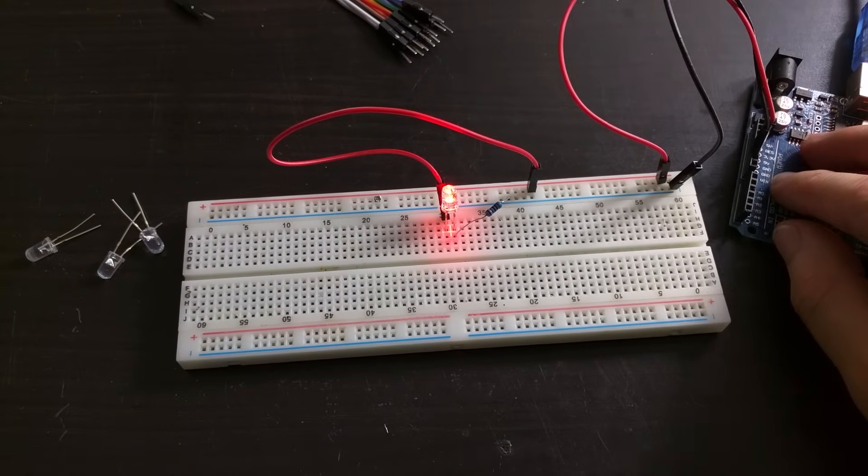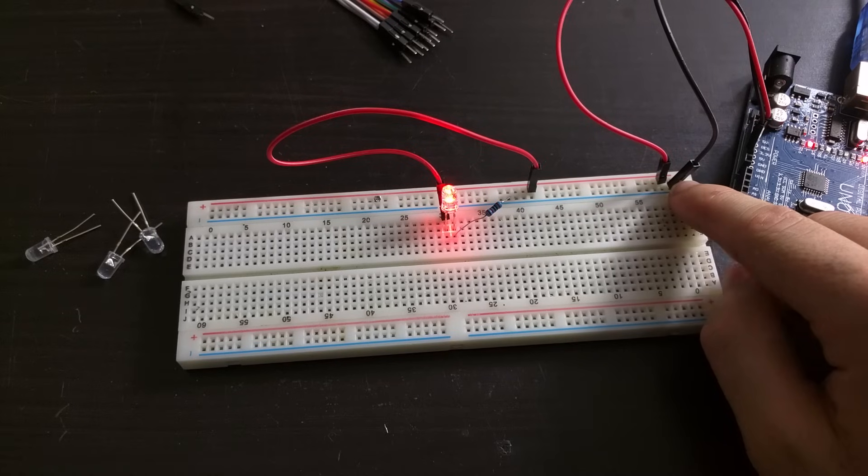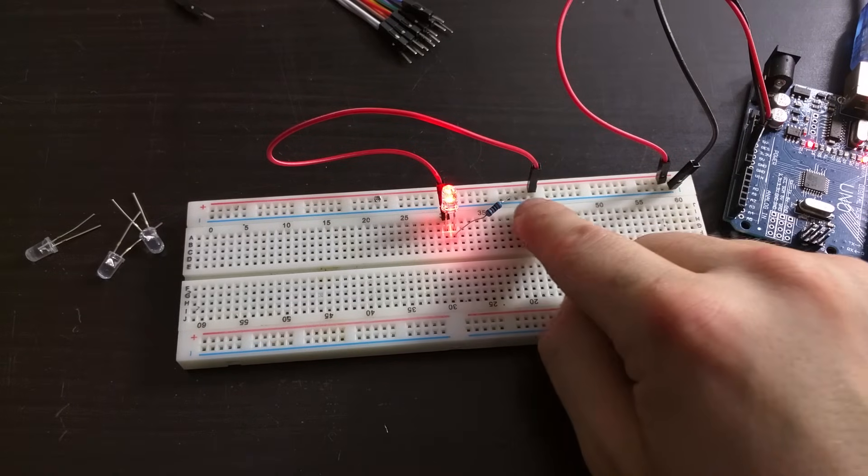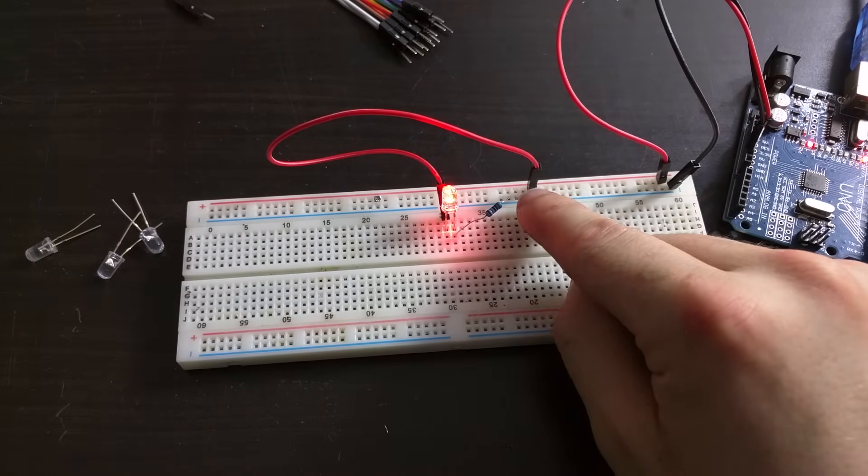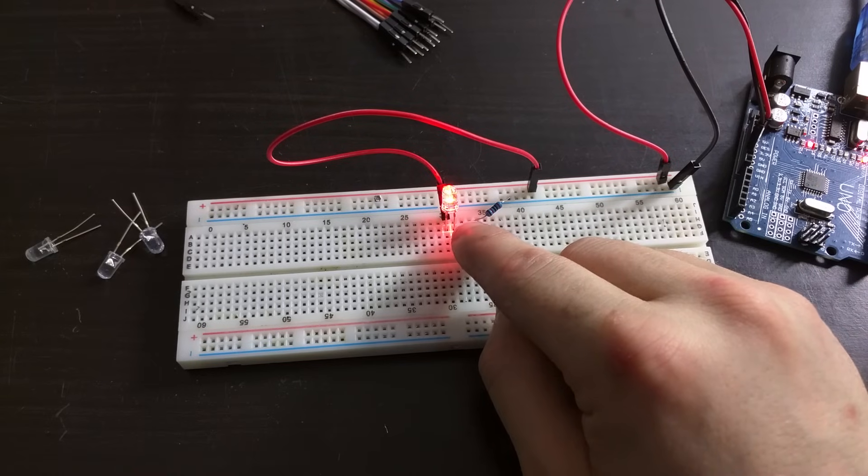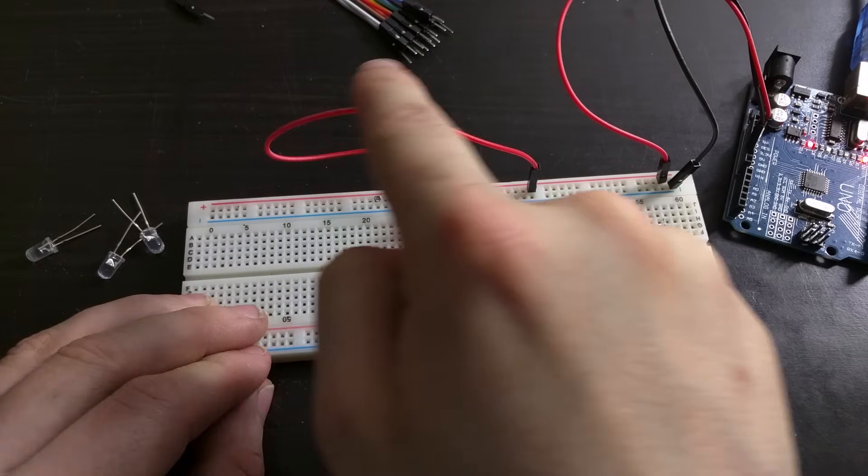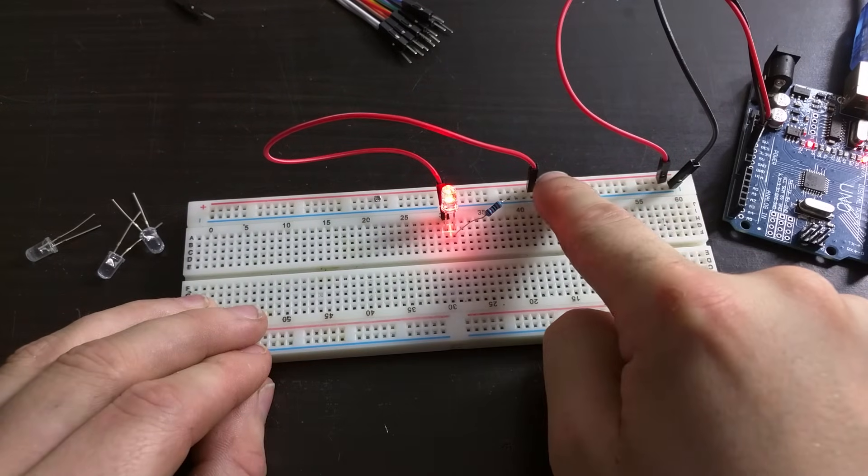So I've got my power coming from the Arduino here, and the negative is connected to this resistor. The power is flowing through this resistor to the negative lead of the LED. It's going through the LED, out to the positive lead of the LED, round, and to the positive rail of the breadboard.